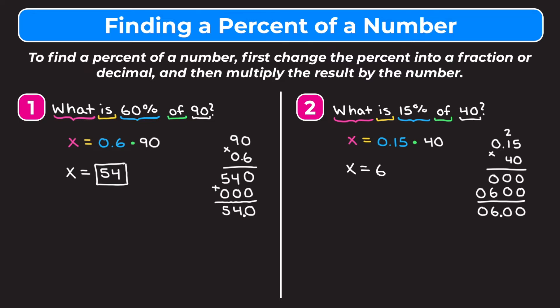X equals 6. We should always mentally check that our answer makes sense. For example 1, we were finding 60% of 90. Since 60% is more than 50%, and half of 90 is 45, our answer should be a little bigger than 45 — and 54 is, so we're in the ballpark. For example 2, 10% of a number is just the number divided by 10, so 10% of 40 is 4. Since 15% should be a bit bigger than that, and 6 is a little bigger than 4, we know we're in the right ballpark.